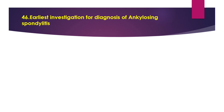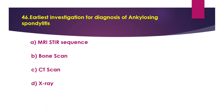Question 46: Earliest investigation for diagnosis of ankylosing spondylitis. Option A: MRI STIR sequence. Option B: bone scan. Option C: CT scan. Option D: X-ray. The answer is option D, X-ray. Ankylosing spondylitis is a type of arthritis that causes inflammation in the joints and ligaments of the spine. Over time, the inflammation may cause stiffness.